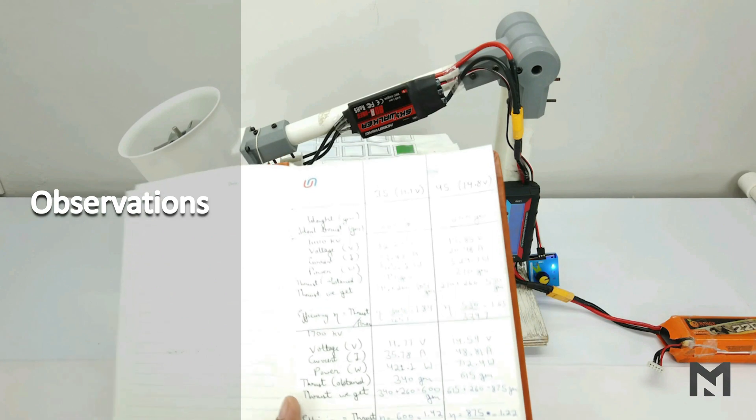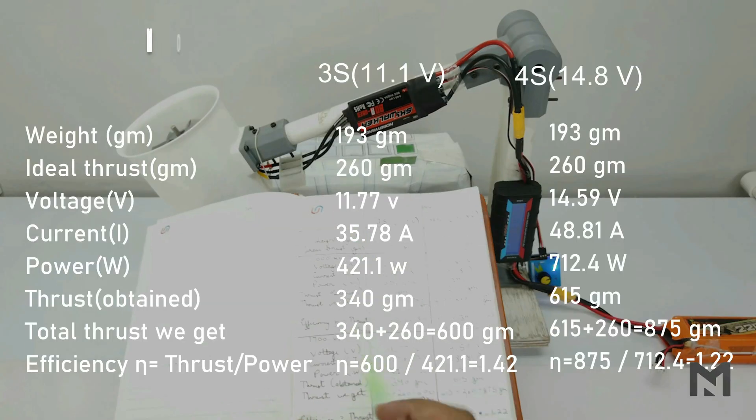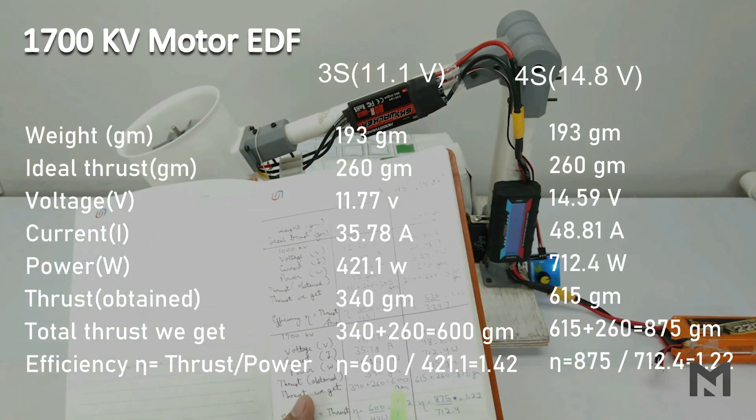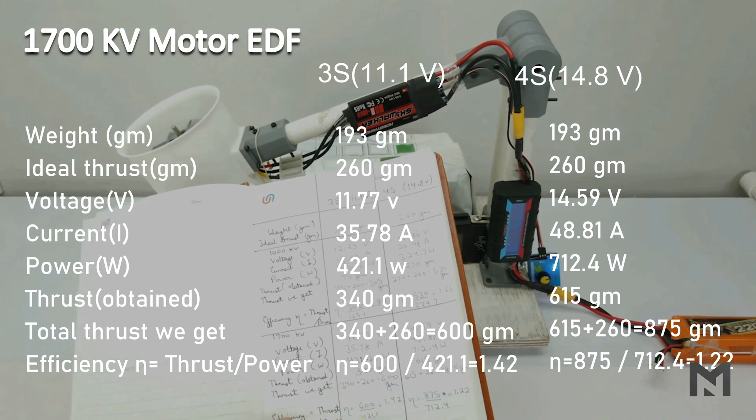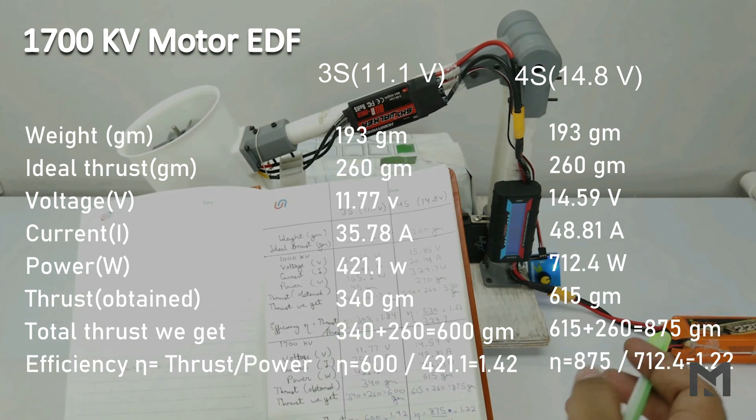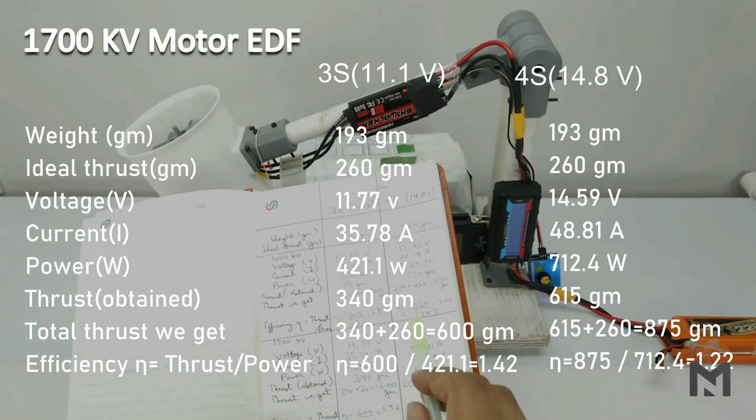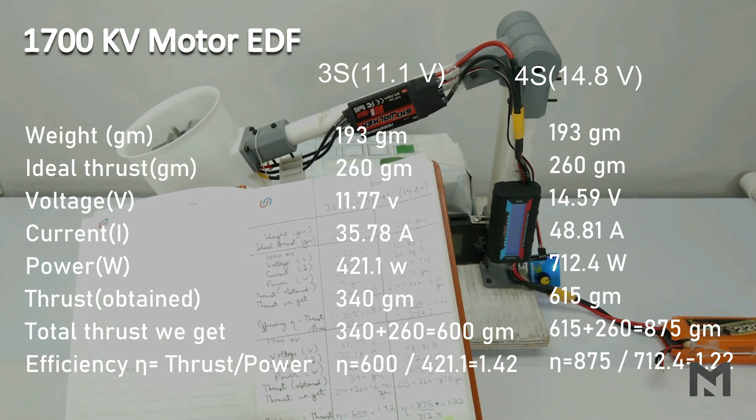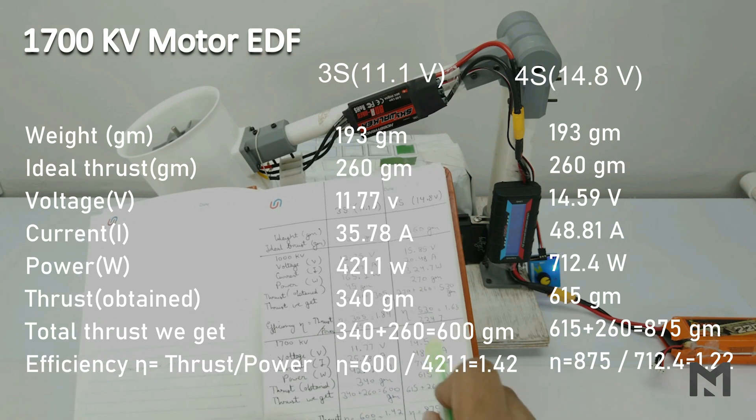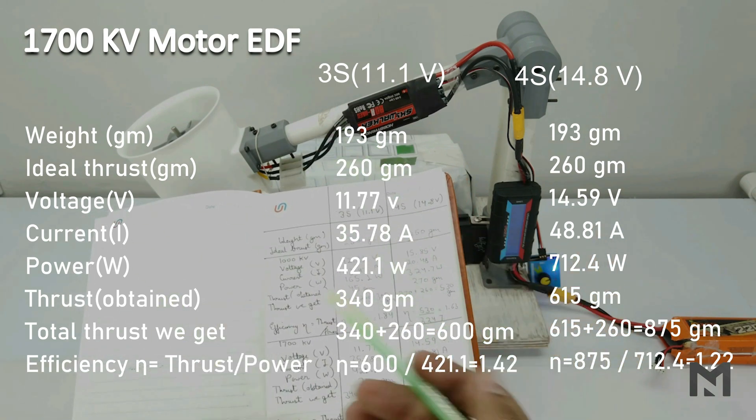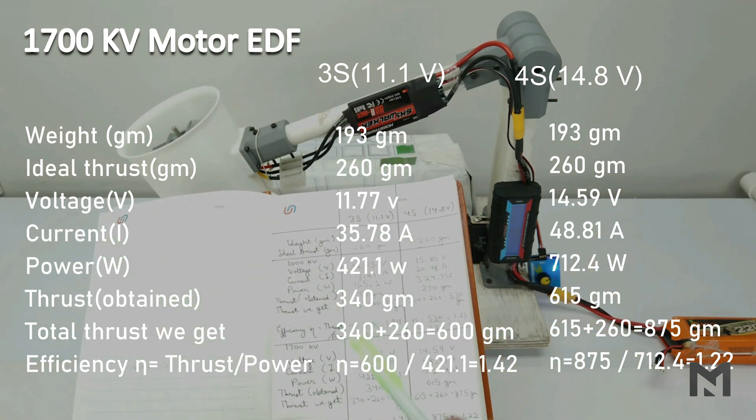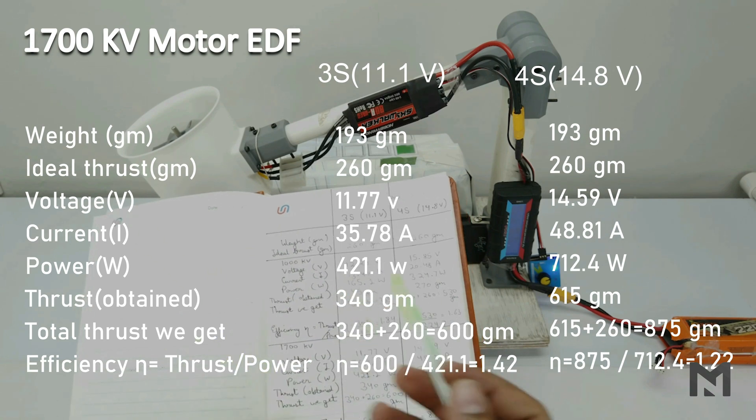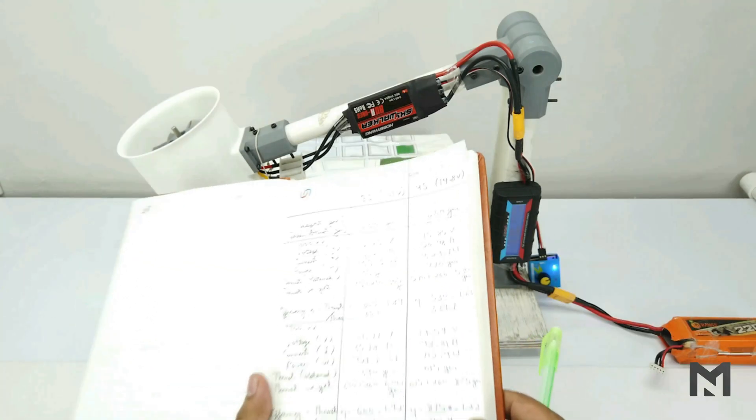So I have performed the thrust calculation and found out that a 1700 KB motor gives 600 grams of thrust at 1.42 efficiency using a 3S battery. But when connected to a 4S battery it gives 875 grams of total thrust at an efficiency of 1.22. No doubt it has a less efficiency but since it has a high mass flow rate thus it fits the perfect requirement for making RC planes and aeroplanes.